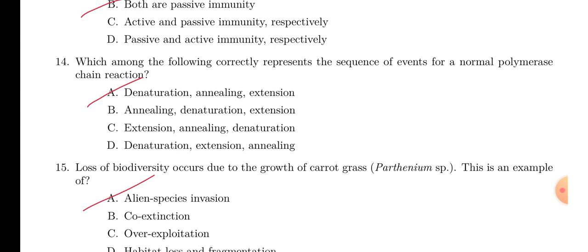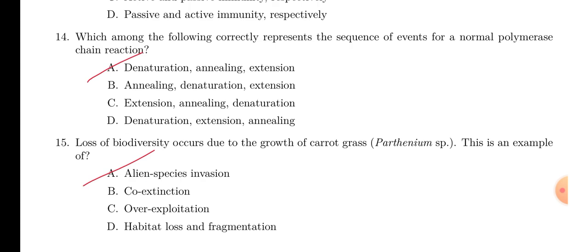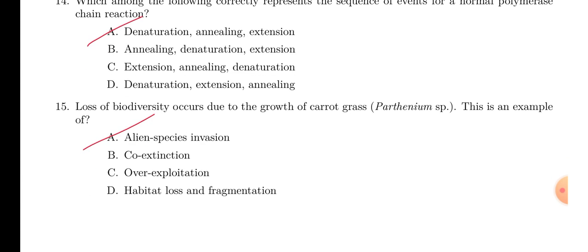Next, in the process of PCR, again, denaturation, annealing, extension, very easy question. Next, is also an easy question. Parthenium carrot grass is an example of alien species invasion.